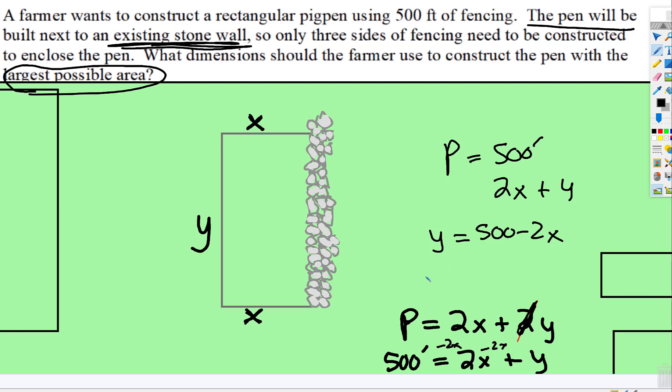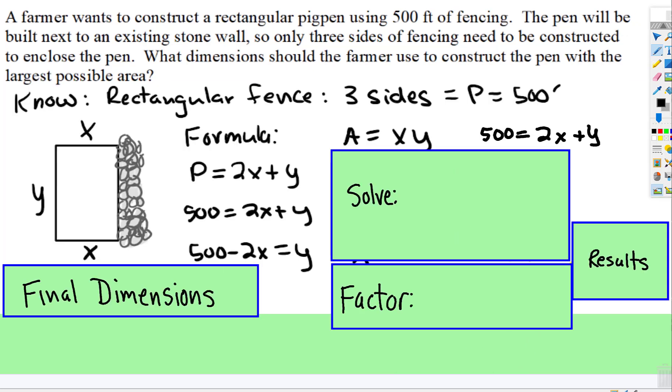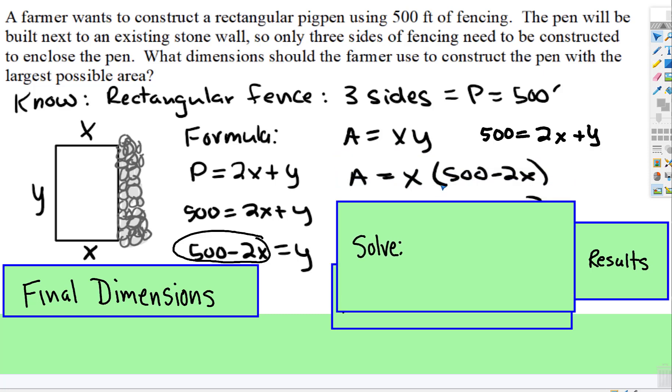And then we want to maximize area, and area is still going to be length times width, so x times y. So here's our diagram, here's our formula, but instead of y, we're going to substitute 500 subtract 2x when we start to solve. So that's what we're going to do.